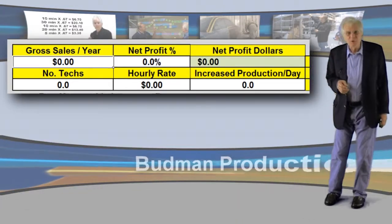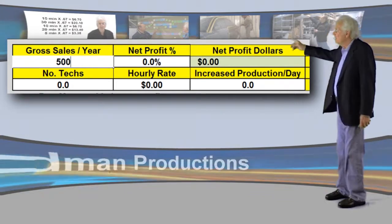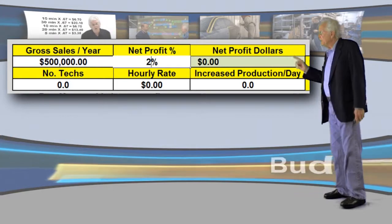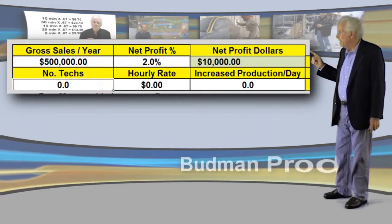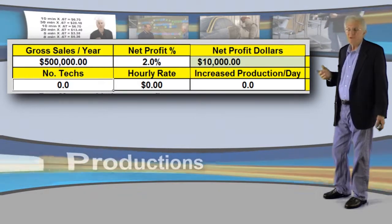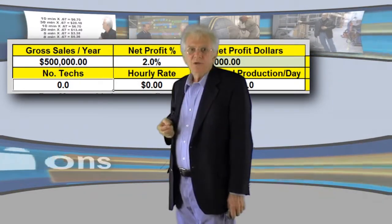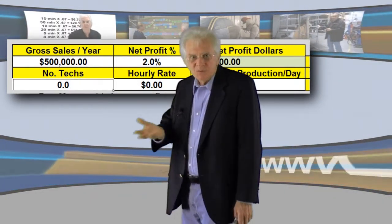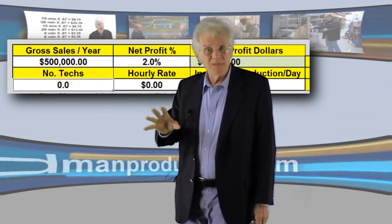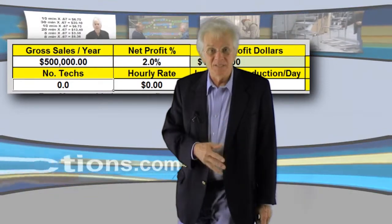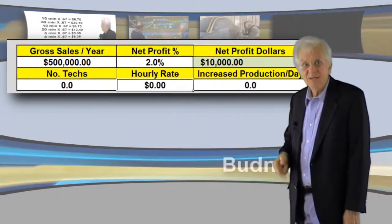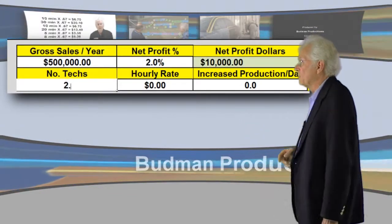Let's say that you're a small shop doing $500,000 a year in sales, and last year you paid taxes on a 2% net profit, putting $10,000 in the bank. You have two techs working for you, and you spend about half of your time administering your business and the other half fixing cars — so you have two and a half techs — and that's what I'm going to enter into this small spreadsheet.